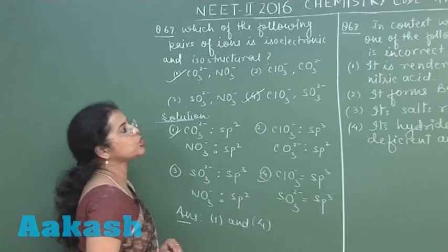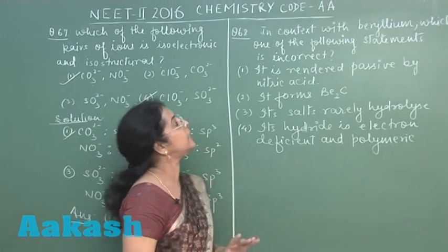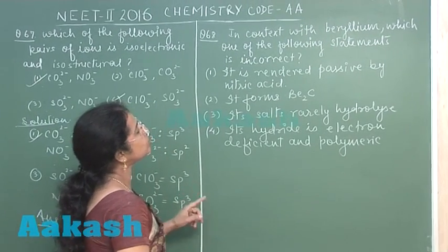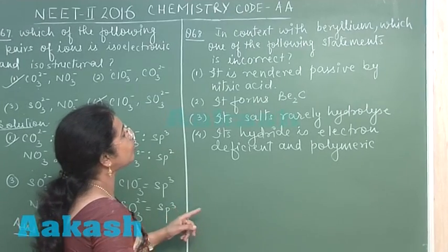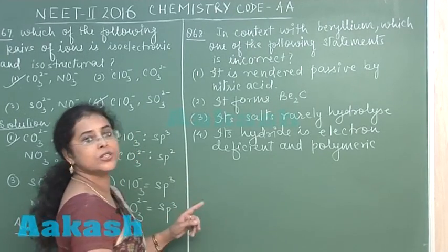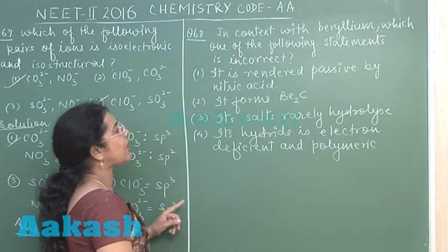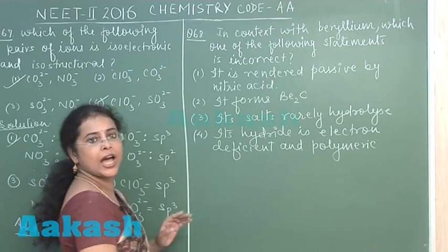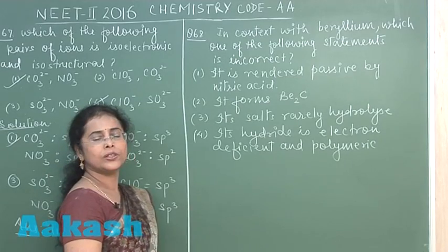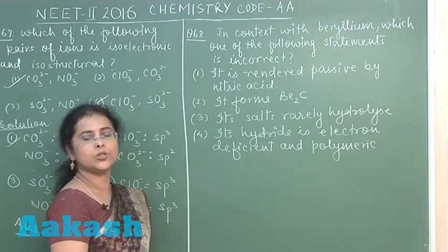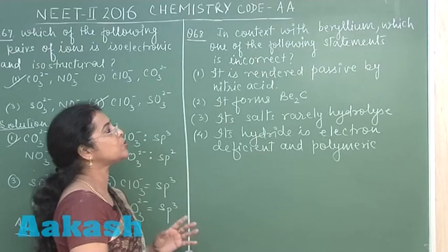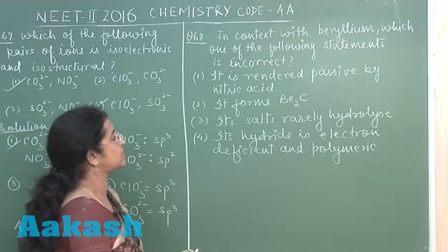Moving to the next question of paper, question number 68. In context with beryllium, which one of the following statements is incorrect? The first one is it is rendered passive by nitric acid, that is true. The reactivity of beryllium is very less, so it becomes passive towards nitric acid.